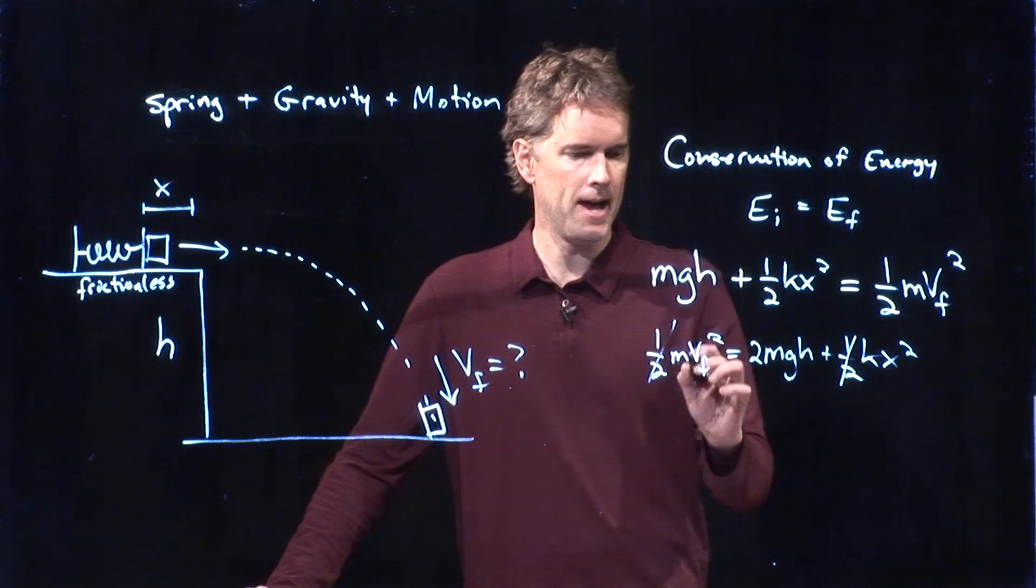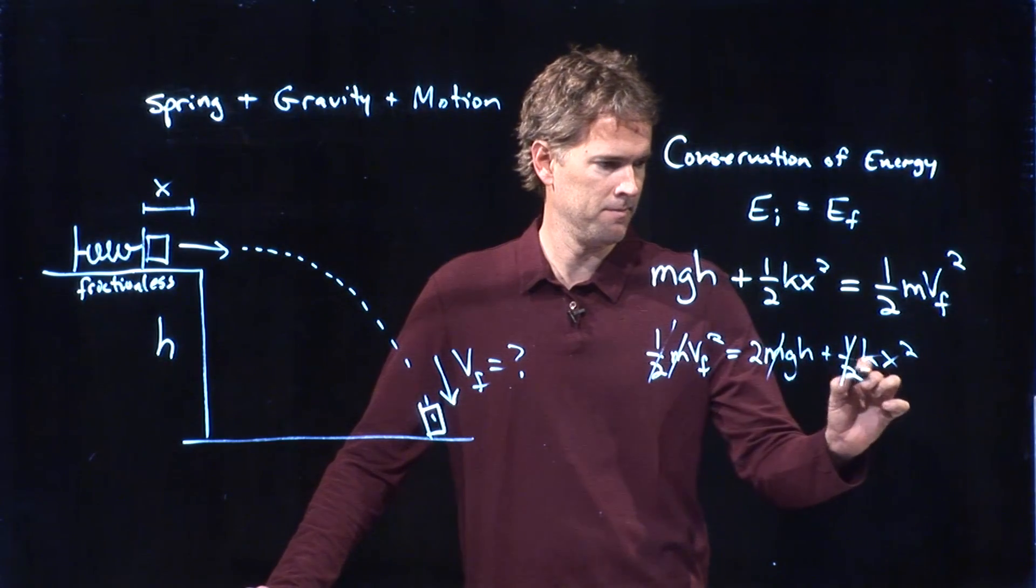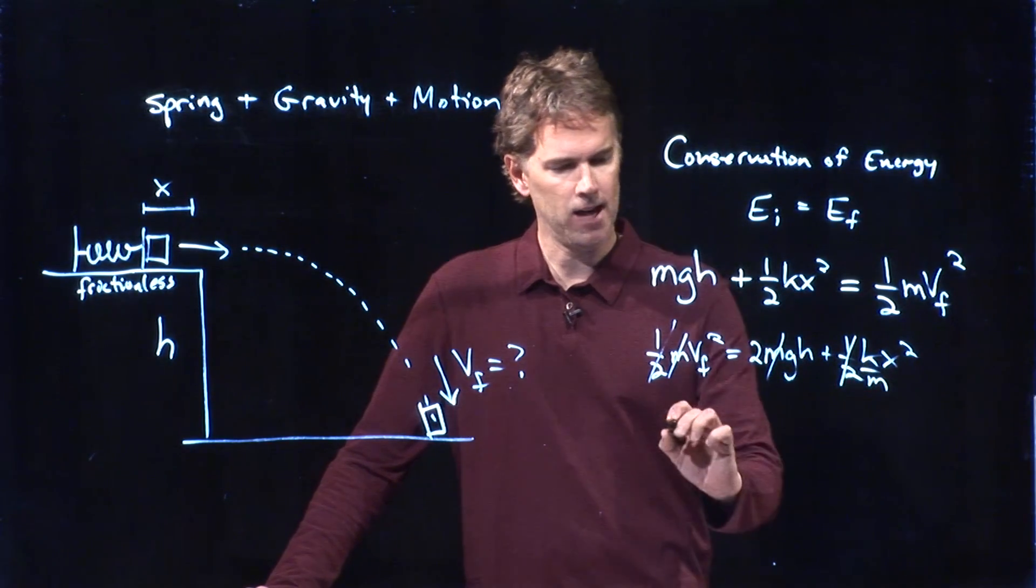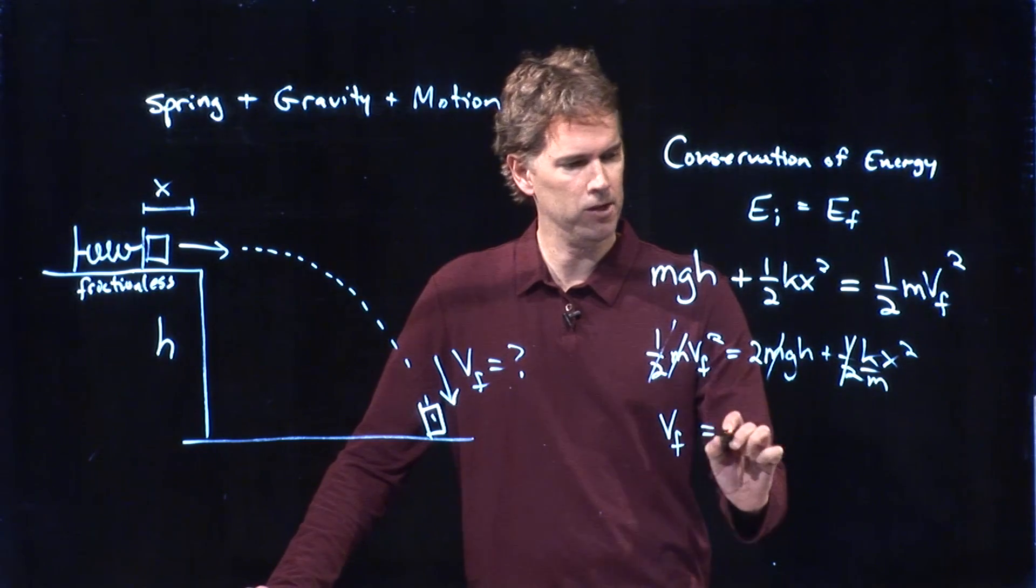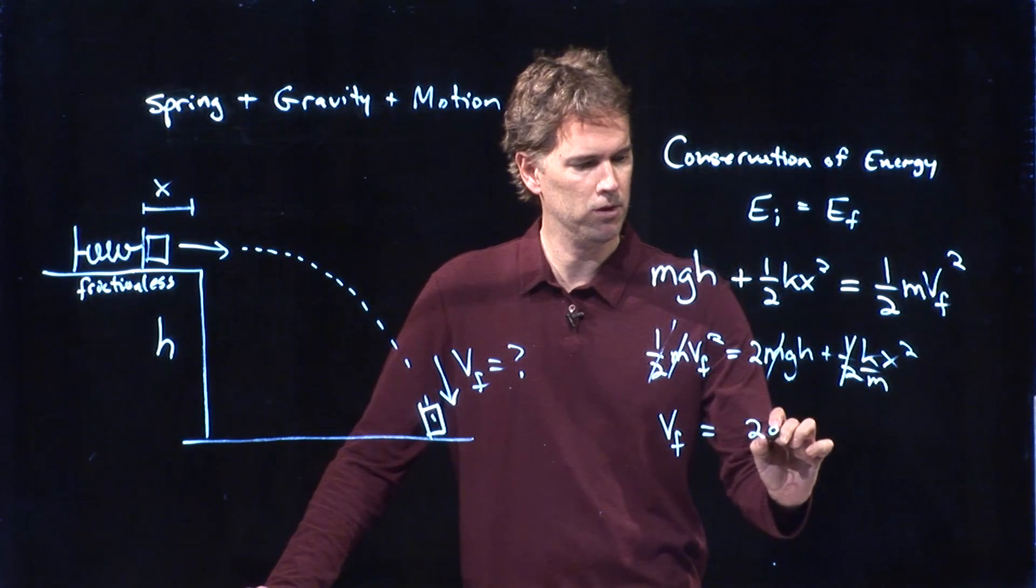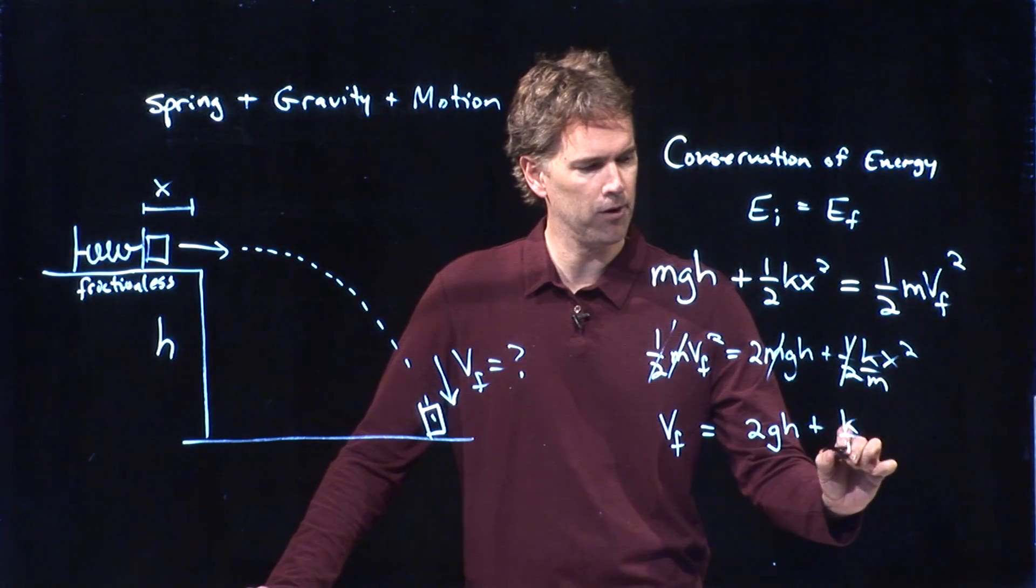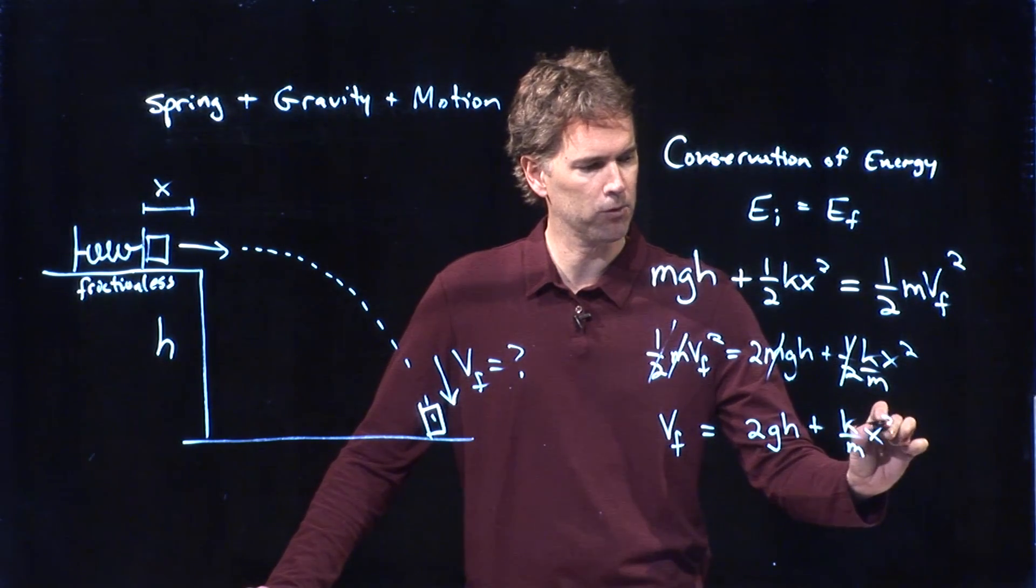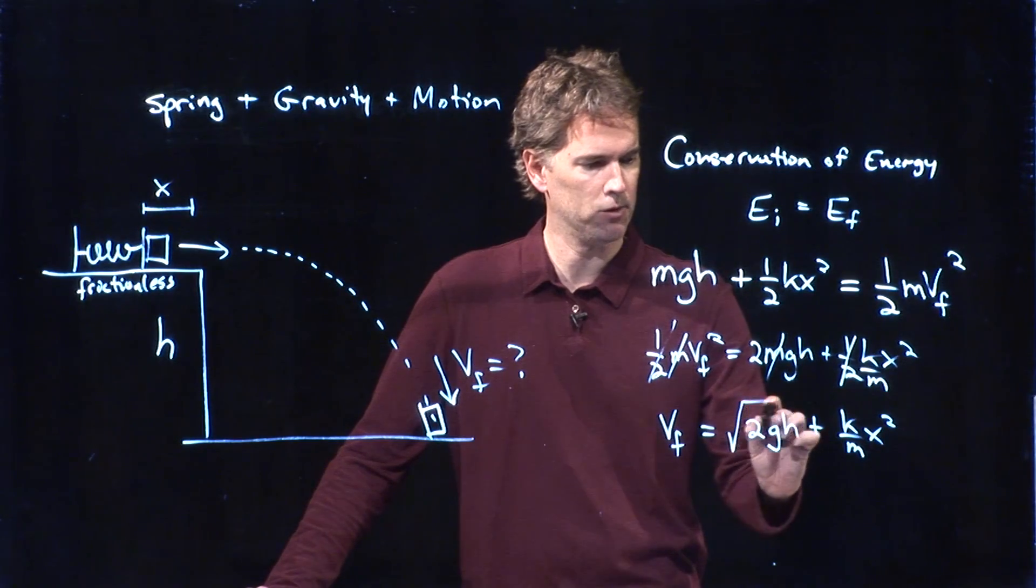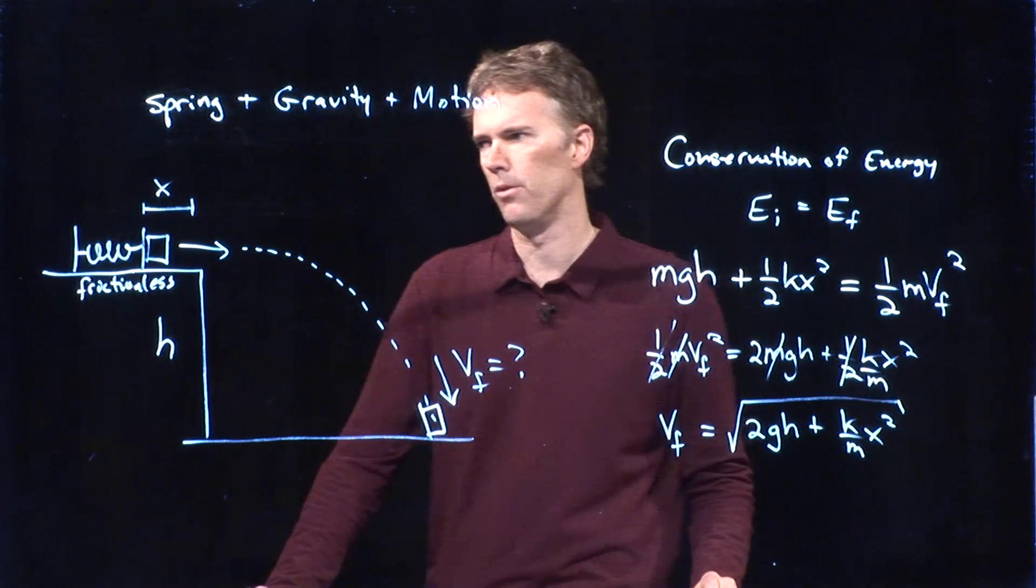I can divide by M. And I get VF is equal to 2GH plus K over M X squared. And then I take the square root of that whole thing.